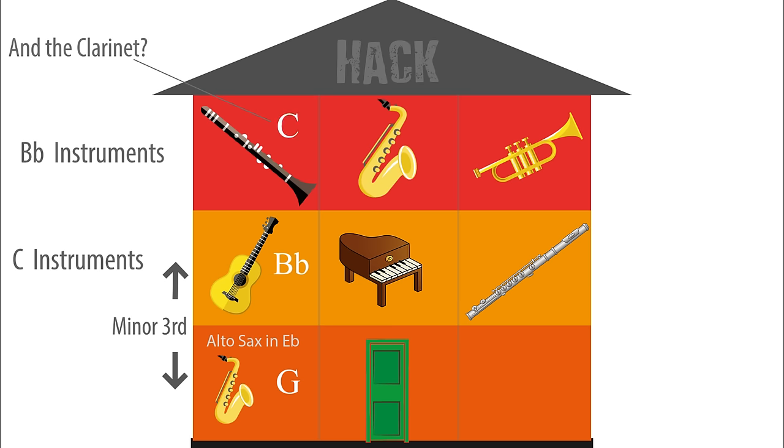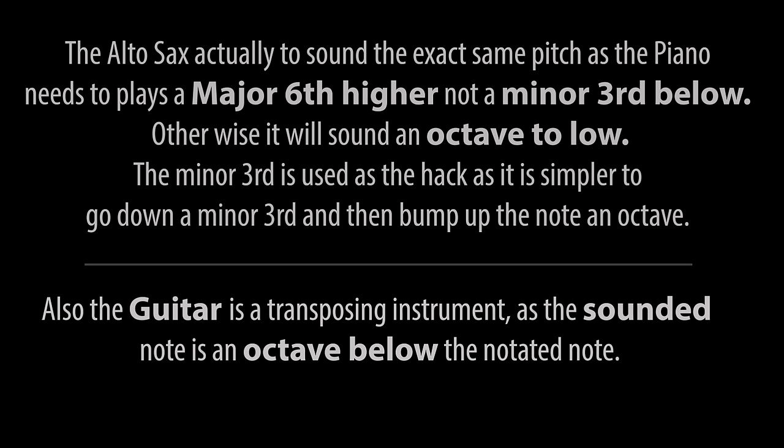There's one small caveat. The alto sax actually needs to play a major sixth higher — not a minor third below — to sound the same exact pitch as the piano. Otherwise it will sound an octave too low. The minor third was shown in the hack as it's simpler to go down a minor third and then just bump up the note an octave.